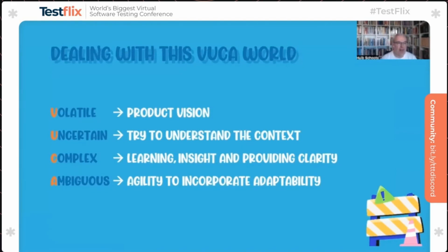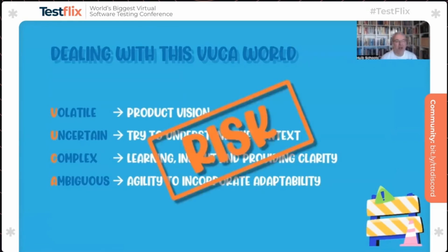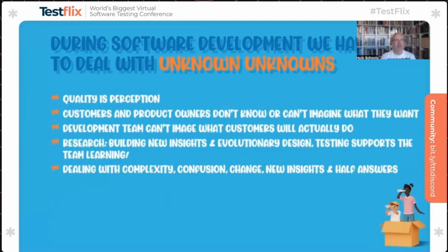It's not only the product or the people — it's also the world around us: volatile, uncertain, complex, and ambiguous. You can use things like product vision to make it better, but it's still about learning, and there's a lot of risk involved. Do you deliberately and explicitly think about and talk about risks with your team? Many people don't — they do it in their head. In a complex world, we need to do it more explicitly. During software development you'll deal with unknown unknowns, because quality is perception — everyone thinks differently about it.